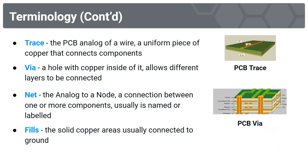Vias are a hole with copper inside, and they allow different layers to be connected. Nets are the analog to a node, and are a connection between one or more components — they're usually named or labeled. And lastly, fills are solid copper areas that are usually connected to ground.